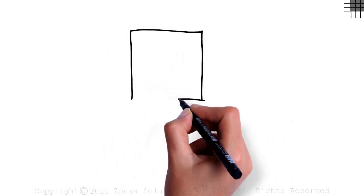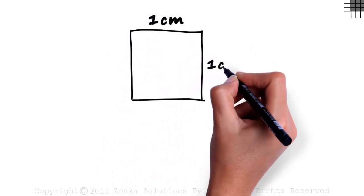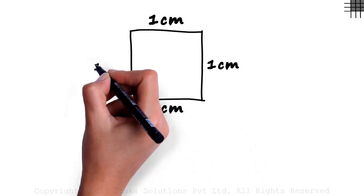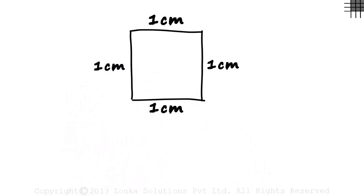Let's look at a square of side one centimeter each. It's always a good idea to write the length next to the respective sides. What is the area of this square?